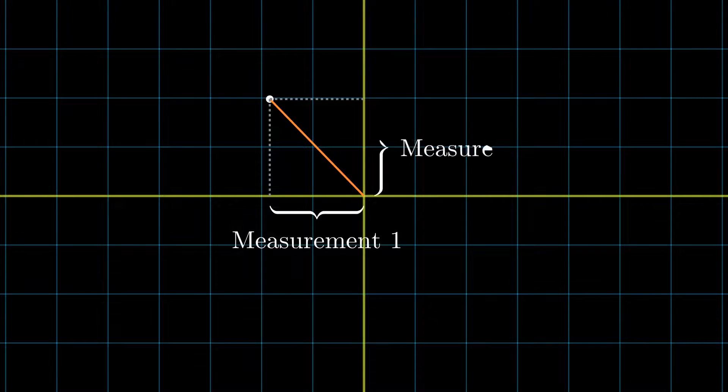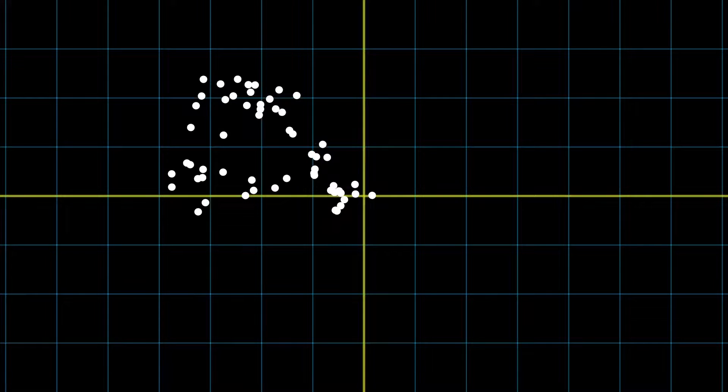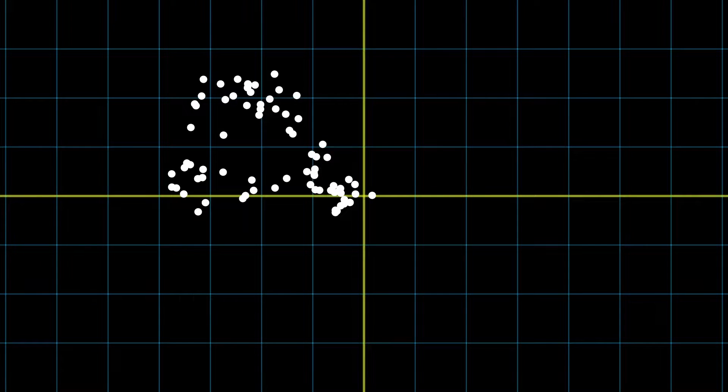Alright, so let's first consider we want to represent two measurements acquired by two different instruments at the same time. Now, let's assume we take a time series of these measurements. We can still represent each one of these measurement points as a combination of the original individual measurements, but it might be more insightful to choose a different set of basis vectors to represent this data set as a whole.